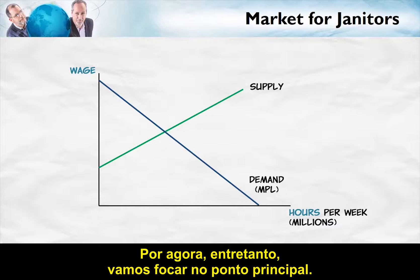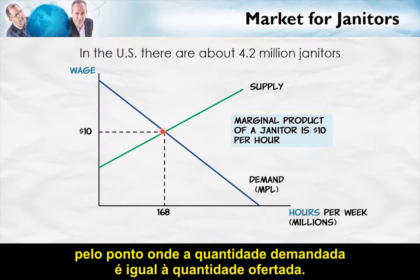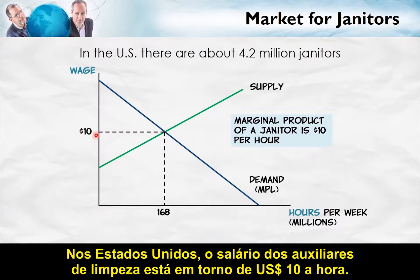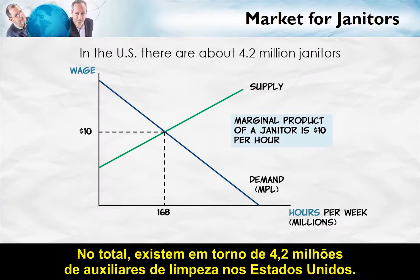For now, let's focus on the main point: the wage is determined, as usual, by the point where the quantity demanded equals the quantity supplied — the intersection of the demand and supply curves. In the United States, the wage for janitors is about $10 an hour, and the quantity supplied is about 168 million hours per week. Overall, there are about 4.2 million janitors in the United States.